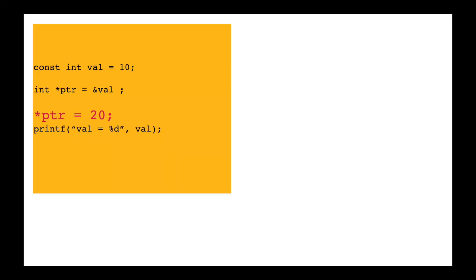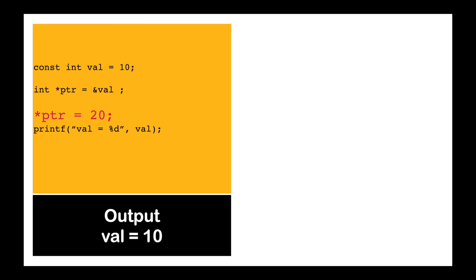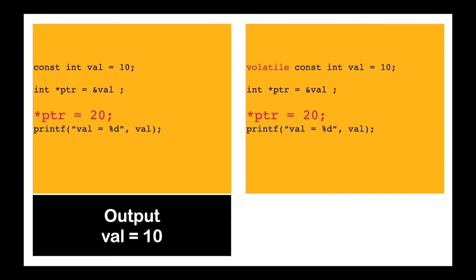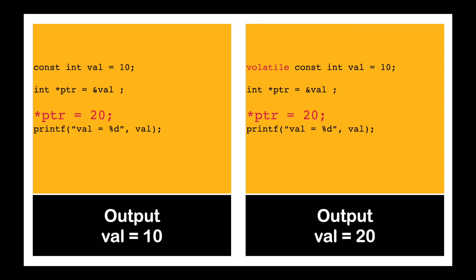Here is an example you can verify on your own setup. A constant variable is referenced using a pointer ptr, then its value is changed and printed. Without volatile, the output will be 10, as the variable value will not be read from memory due to compiler optimization. If you add the volatile keyword to the variable and recompile and re-execute, the output will be 20, as it will be read directly from memory.